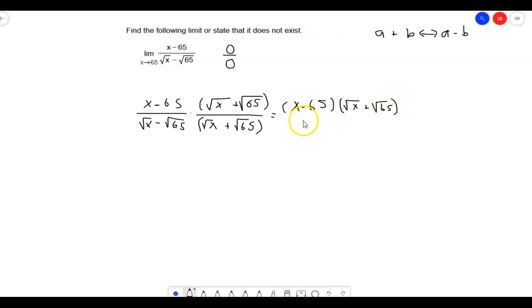And on the bottom, once again, since this is the difference of squares, if you multiply the inner terms and the outer terms, they're just going to be opposite signs of each other, which cancel out. So we're just looking at the first term squared. So the square root of x times the square root of x is just x.